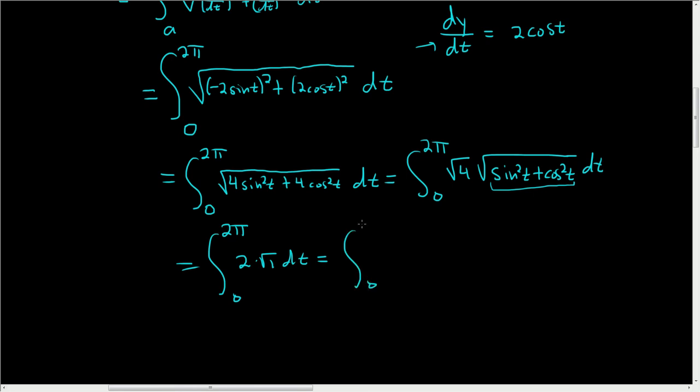And that's just 0 to 2π, 2 dt. We integrate 2, we just get 2t, and we're going from 0 to 2π.